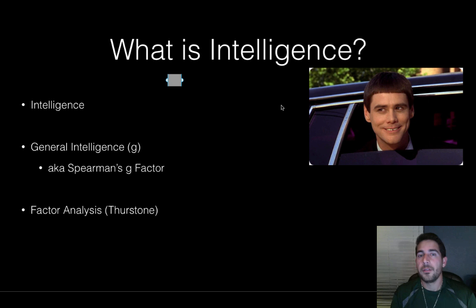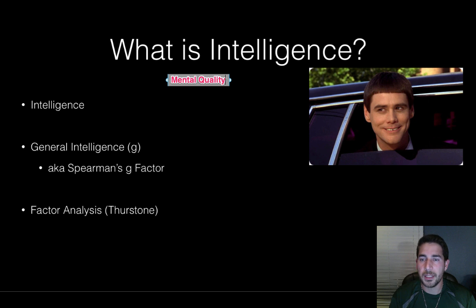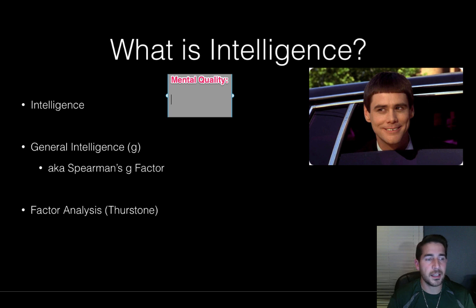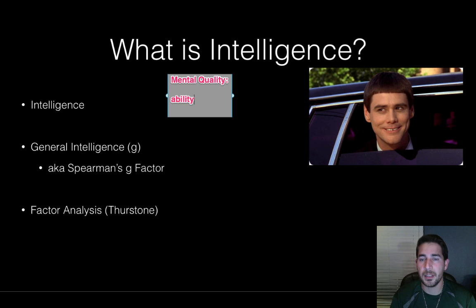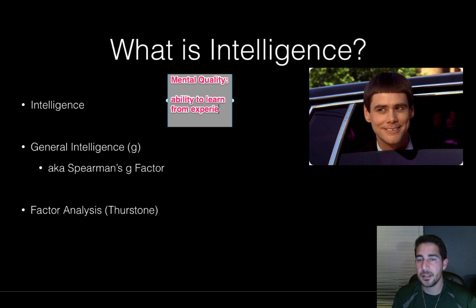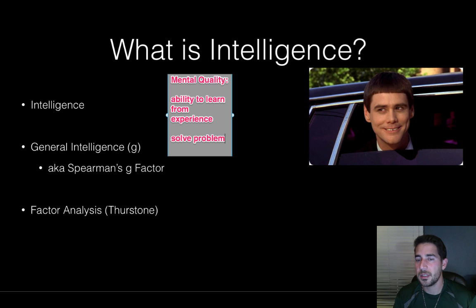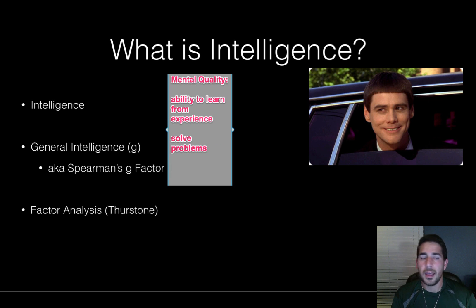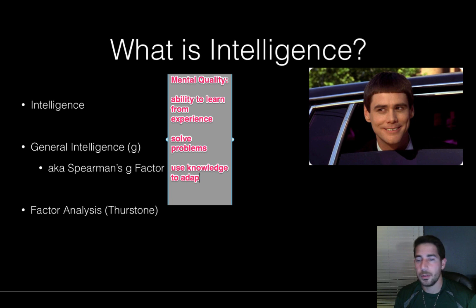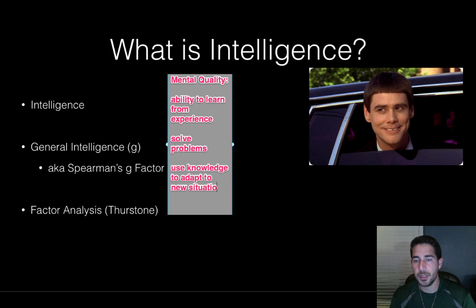For us, intelligence is a mental quality, and it's basically three things: the ability to learn from experience, the ability to solve problems, and the ability to use knowledge to adapt to new situations.